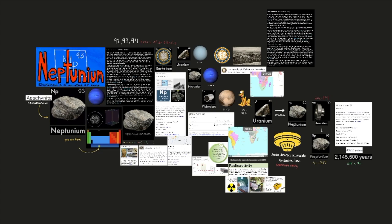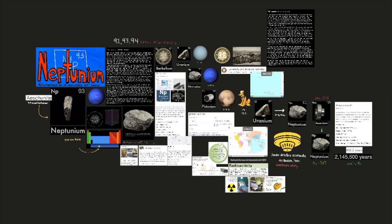This is due to the way the protons and neutrons pack themselves in the nucleus. Just as the noble gases are chemically stable because they have just the right number of electrons to form a complete outer shell, the nuclei of even numbered elements in this range have the right number of protons and neutrons to form advantageous configurations.